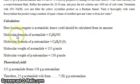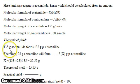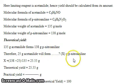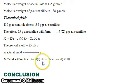For the calculations, the limiting reagent is acetanilide, so yield is calculated from its amount. The molecular formula of acetanilide gives a molar mass of 135 g/mol, and paranitroaniline gives 138 g/mol. Therefore, 135 g of acetanilide theoretically forms 138 g of paranitroaniline; thus 25 g of acetanilide gives a theoretical yield of 25.5 g. Percentage yield equals practical yield divided by theoretical yield, multiplied by 100.